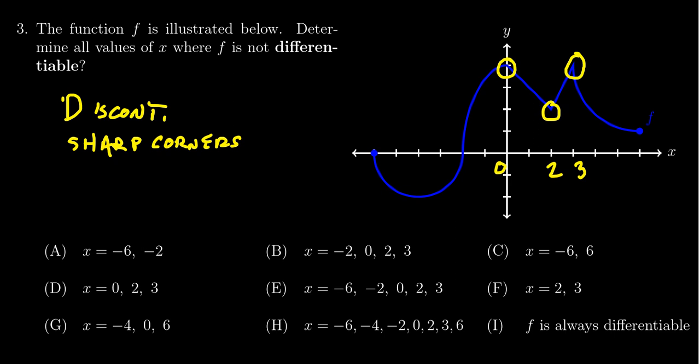The point is, if we take the derivative from the left and from the right—that is, we look at the slope of the tangent lines—those would disagree with each other and would put a jump discontinuity on the derivative function. The derivative is not going to be defined there.